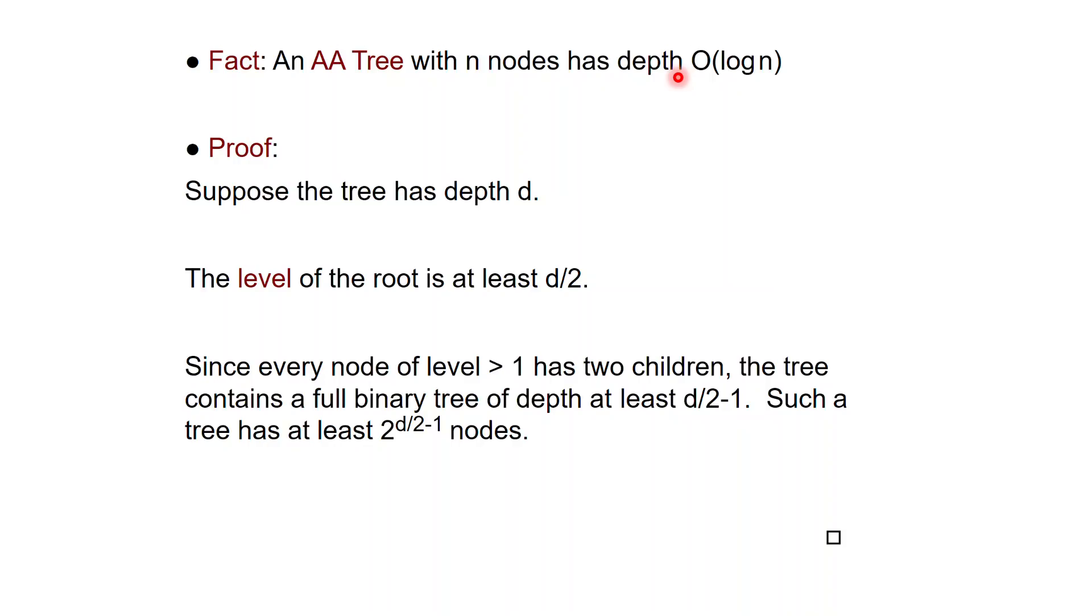And here is just the proof just to show you how the conditions are used. So if d is the depth of the tree, then we see that the level of the root has to be at least d over 2.